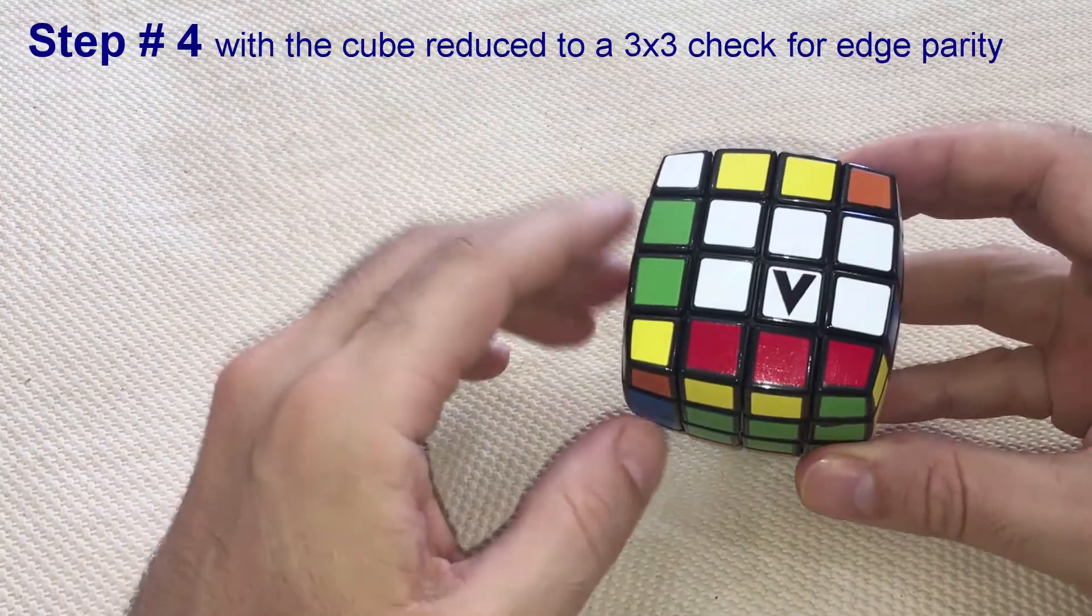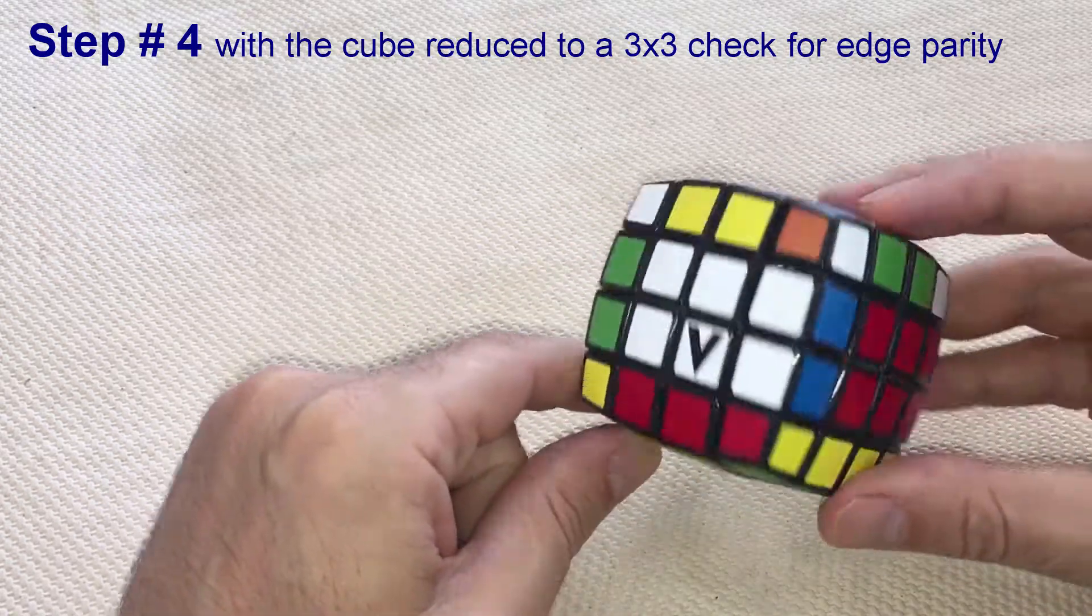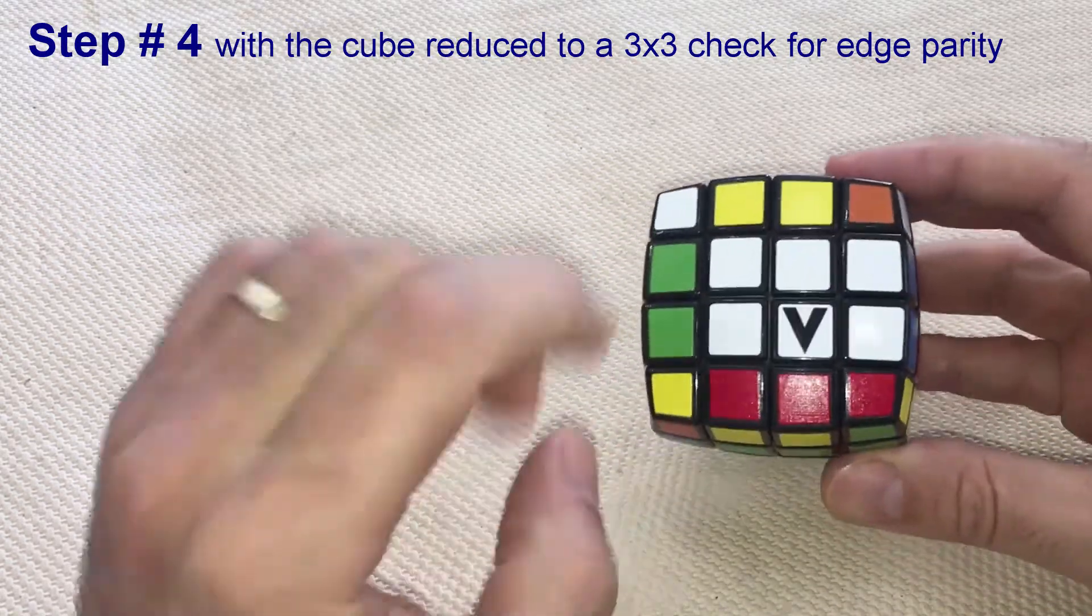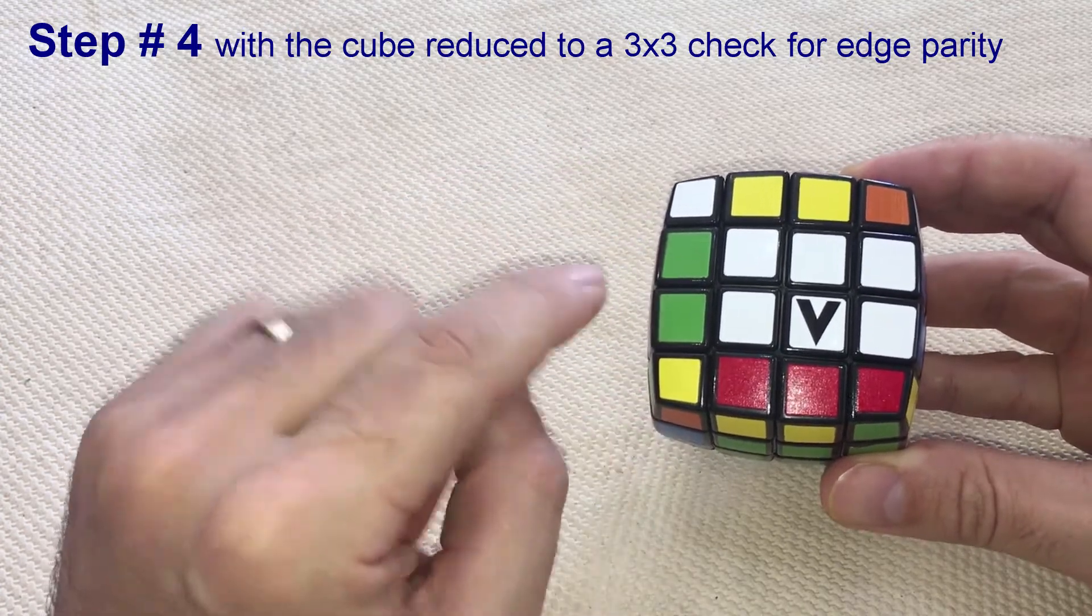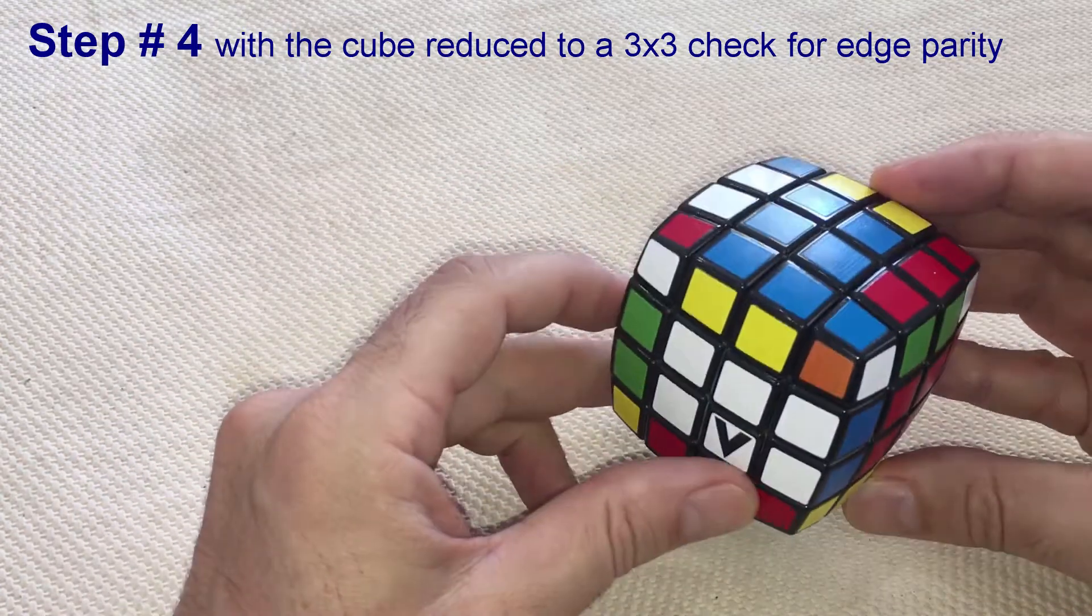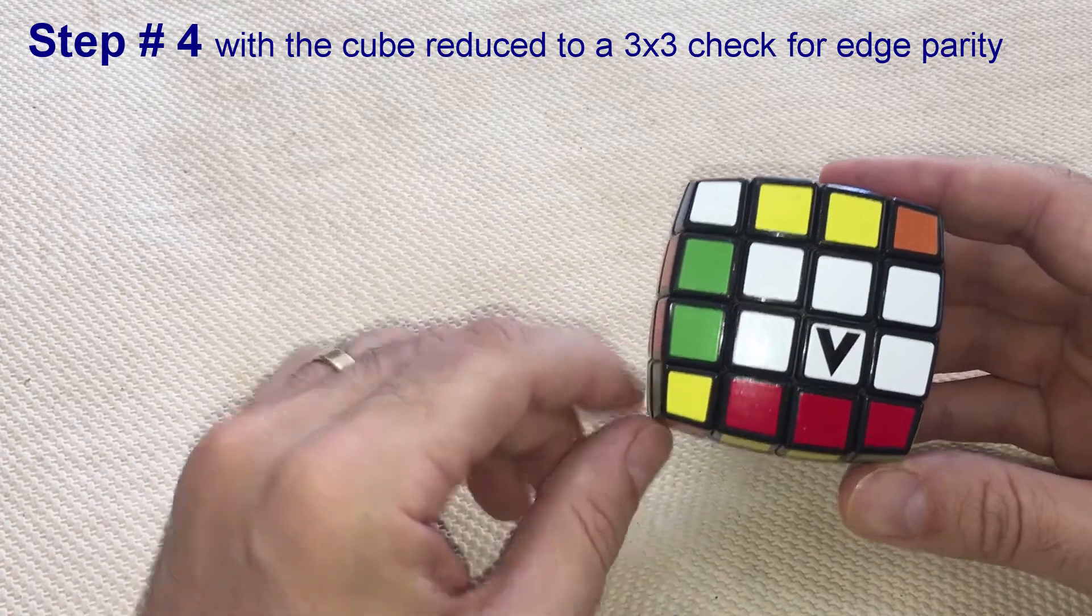Now, at this stage, with the cube scrambled just like a 3x3, we are going to figure out if there is or not edge parity. And if there is, fix it without the use of any complex algorithms.